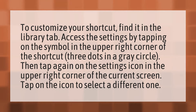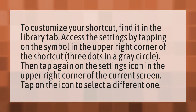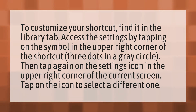To customize your shortcut, find it in the Library tab. Access the settings by tapping on the symbol in the upper right corner of the shortcut — three dots in a gray circle. Then tap again on the settings icon in the upper right corner of the current screen. Tap on the icon to select a different one.